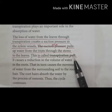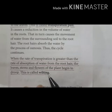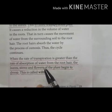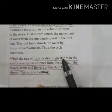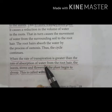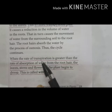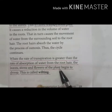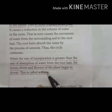Ascent of sap refers to the upward movement of water and minerals. Next is wilting. When the rate of transpiration is greater — when the loss of water from the exposed parts of the plant is more than the rate of absorption of water — it means the roots are absorbing less water while loss of water is more, and then the leaves, stem, and flowers of the plant begin to droop. This is called wilting.